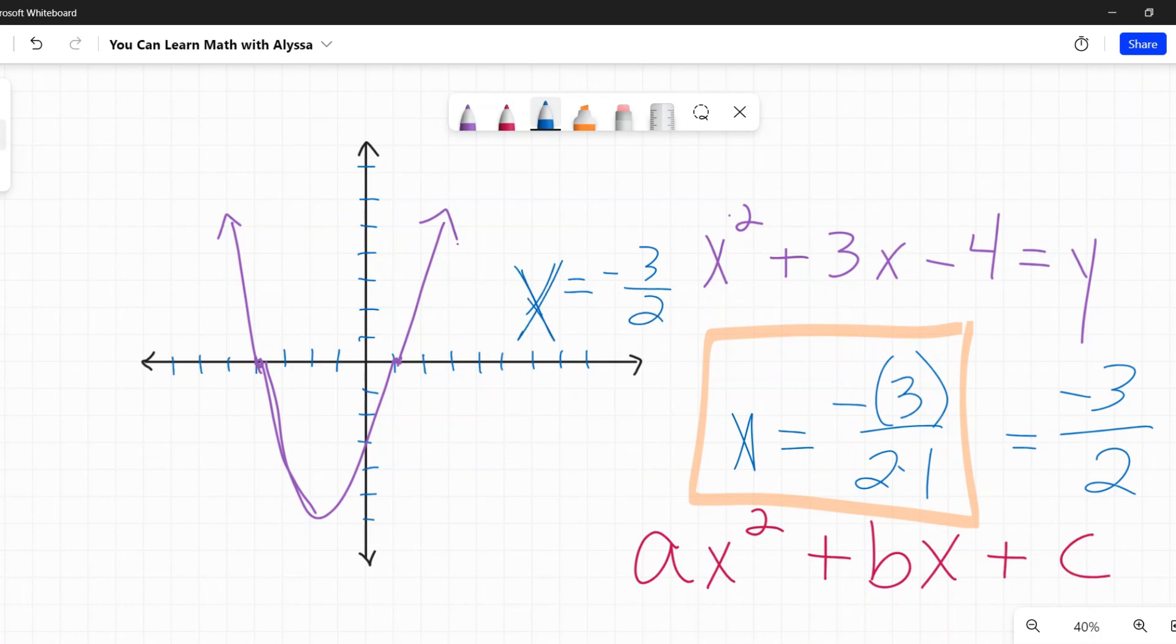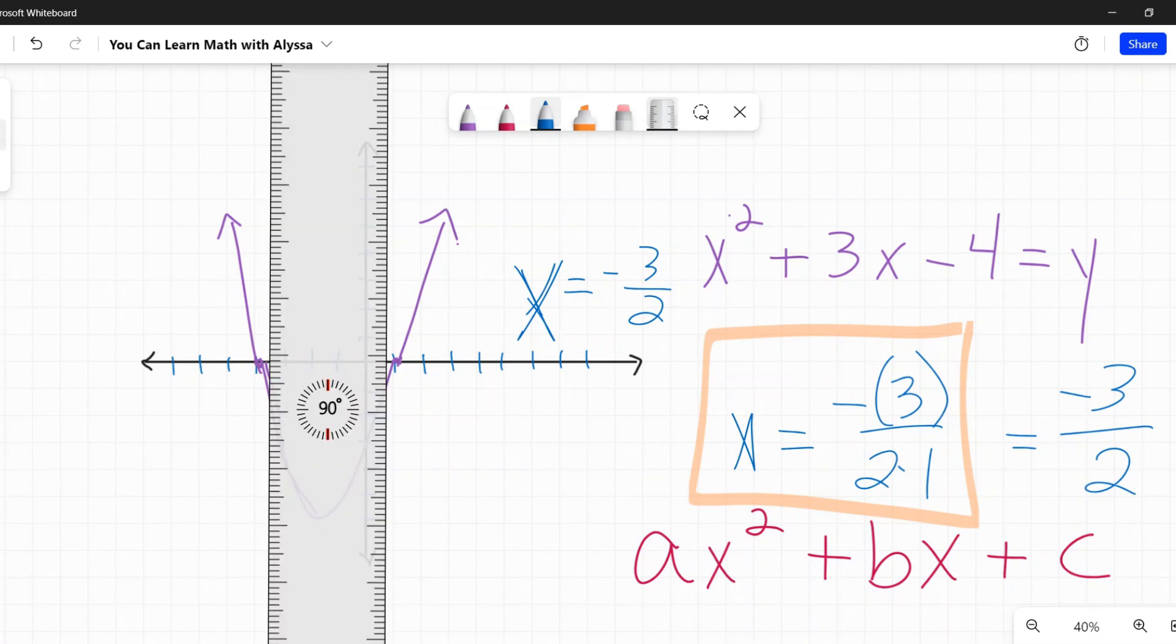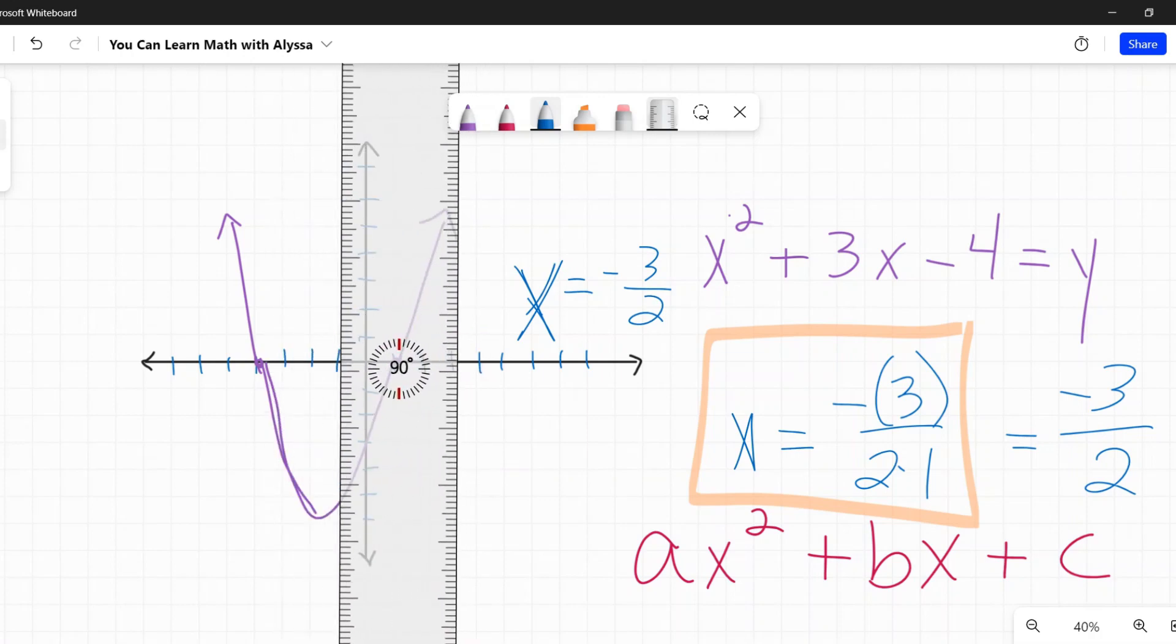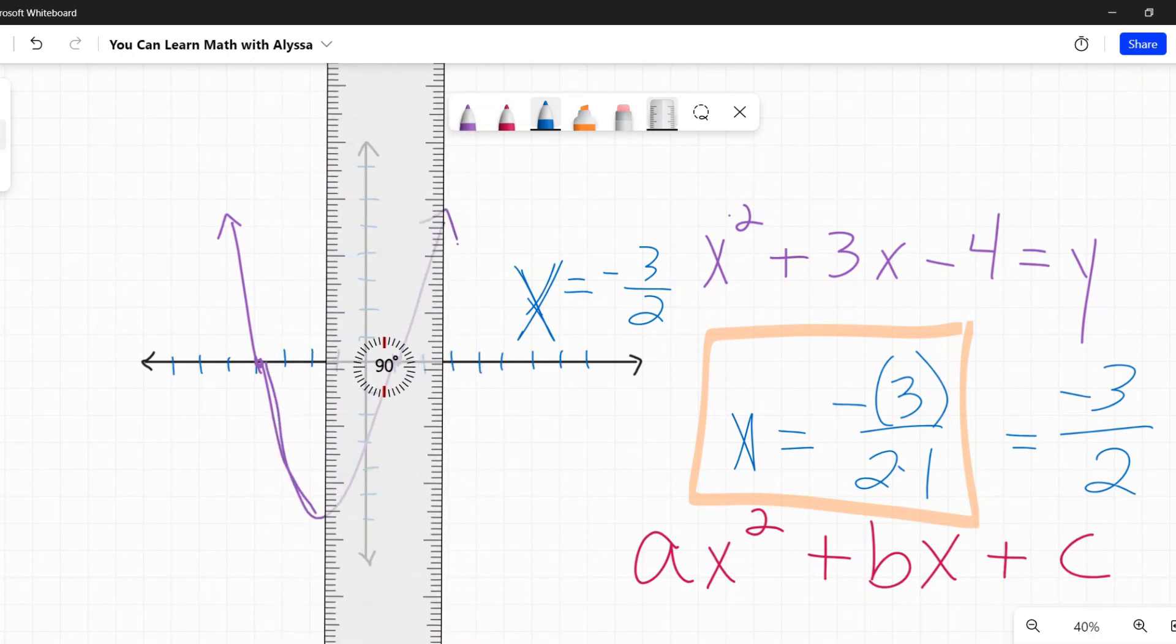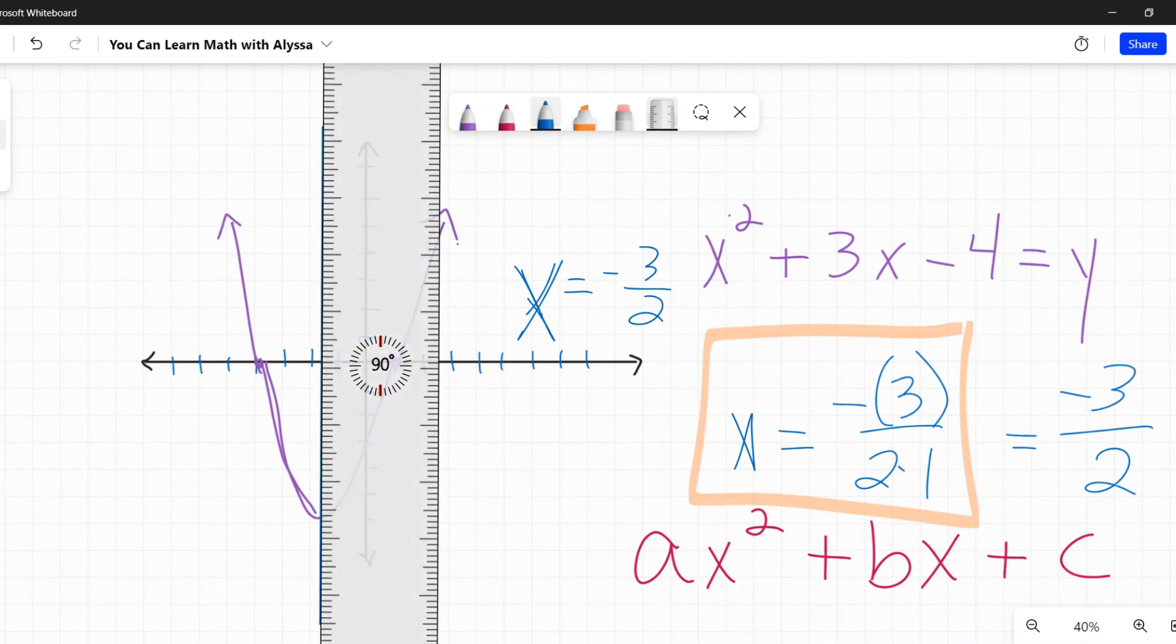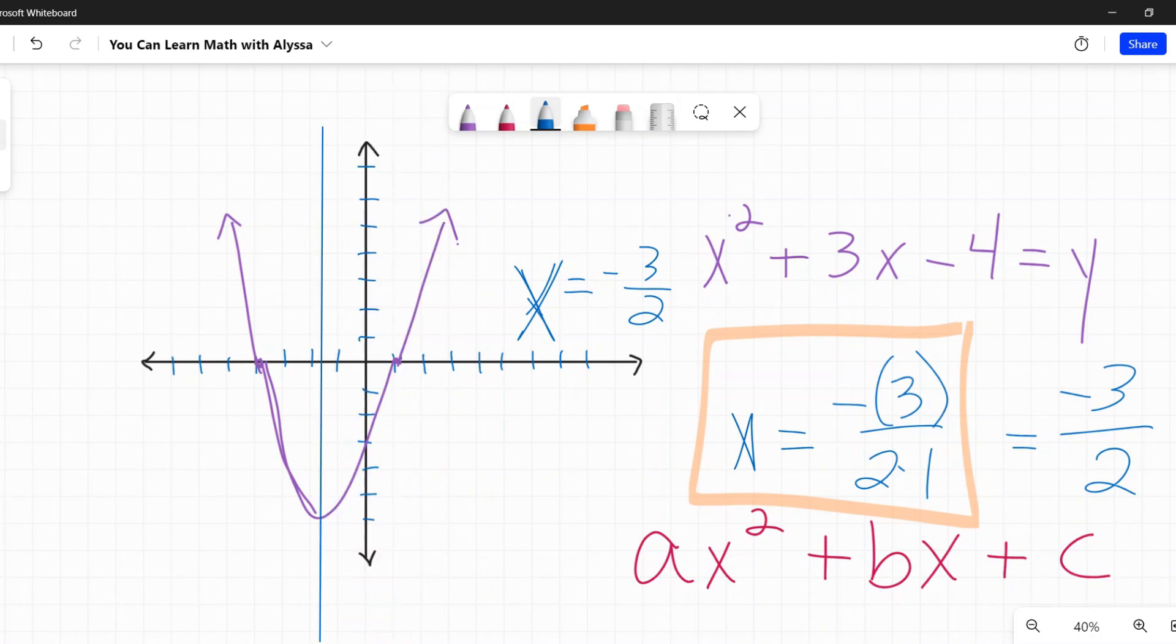My axis of symmetry is x equals negative 3 halves or negative 1 and a half, which means it should be somewhere right around pretty close to there. And hey, my parabola when it has that axis of symmetry almost looks half decent. Almost. Who am I kidding? It looks bad.